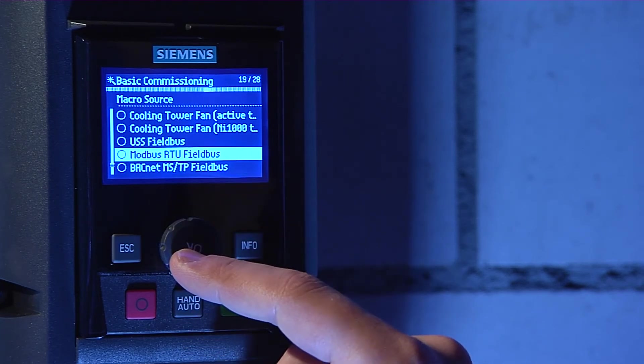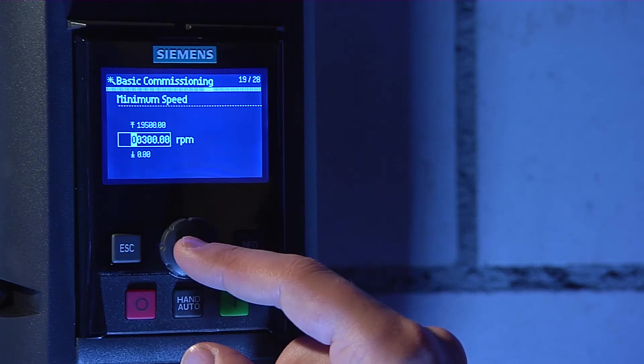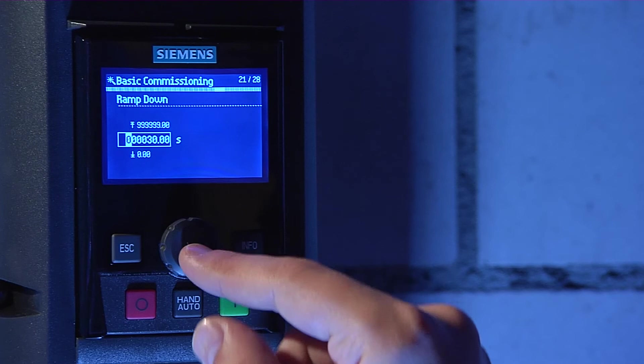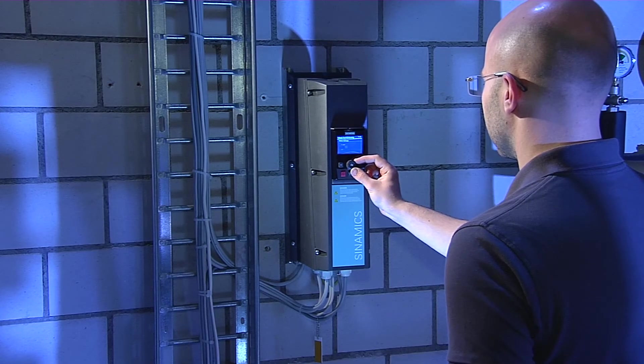In the next step, set the minimum speed of the motor as a fraction of the synchronous motor speed. Select the ramp up and ramp down times suitable for your application. The getting started guide included with the product gives recommendations for the most common HVAC applications.